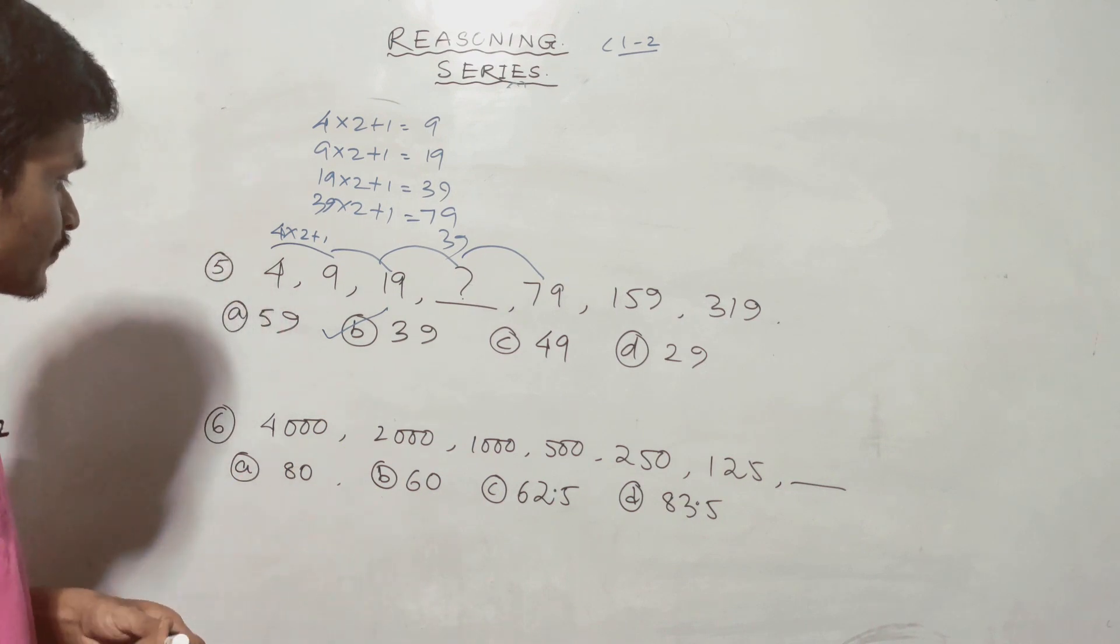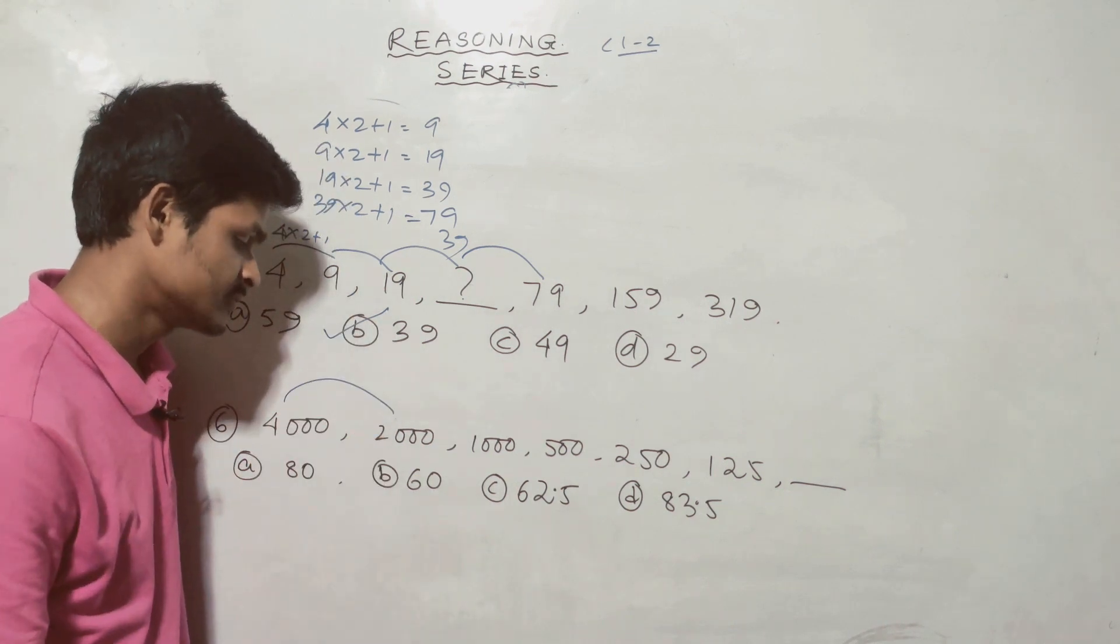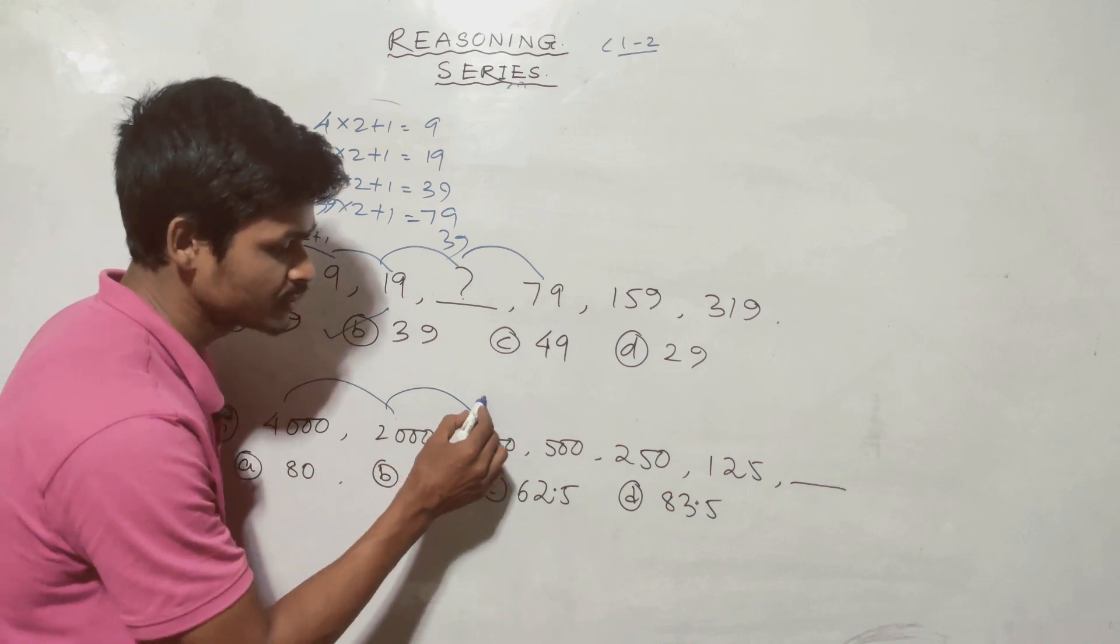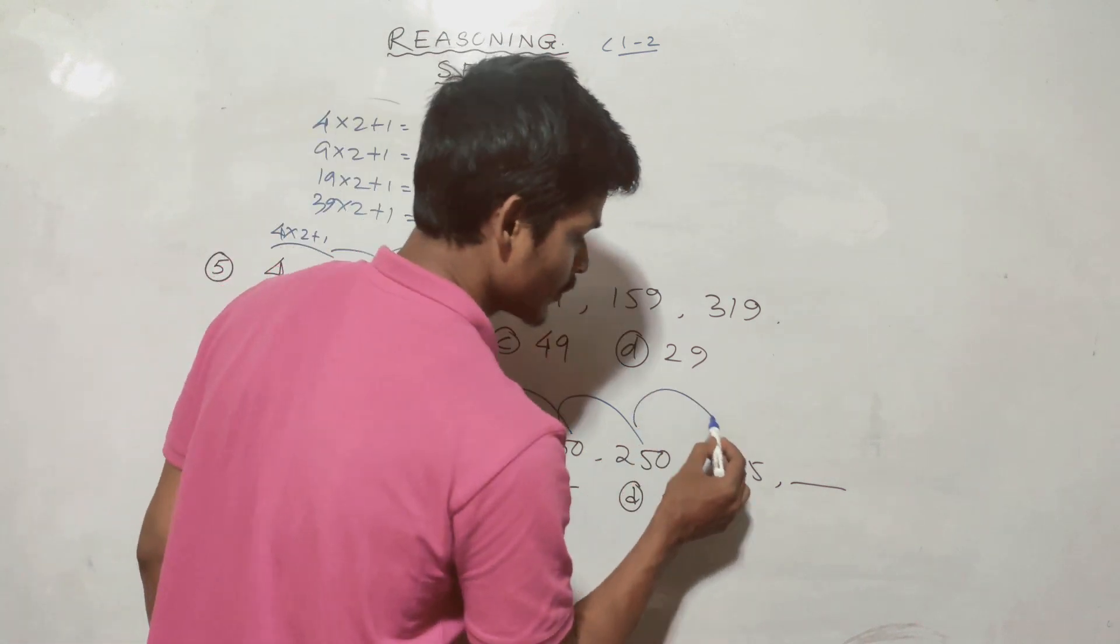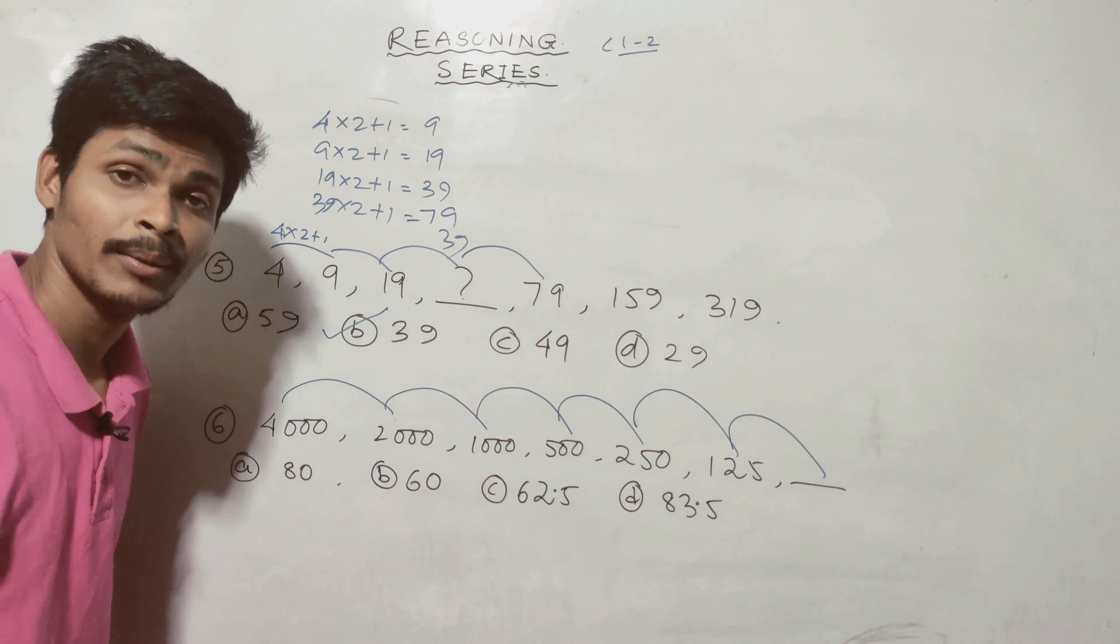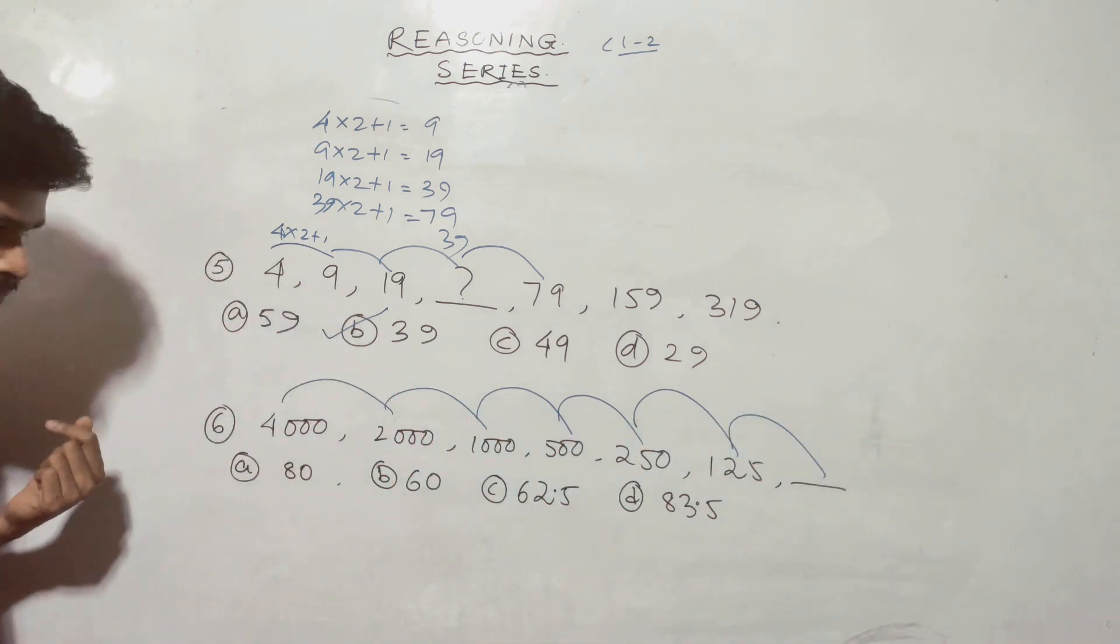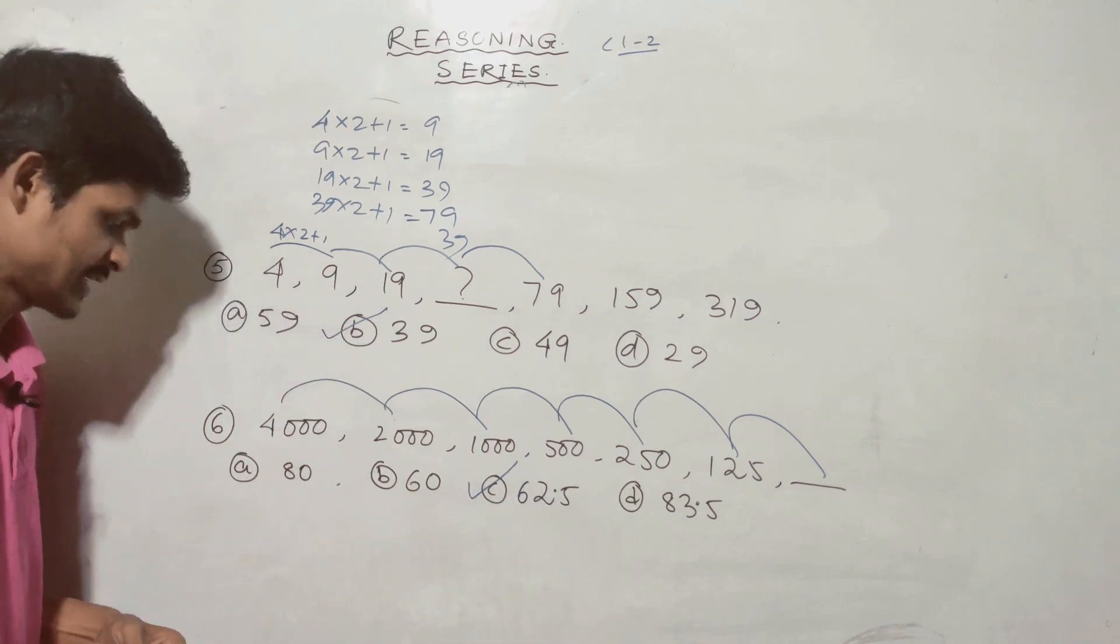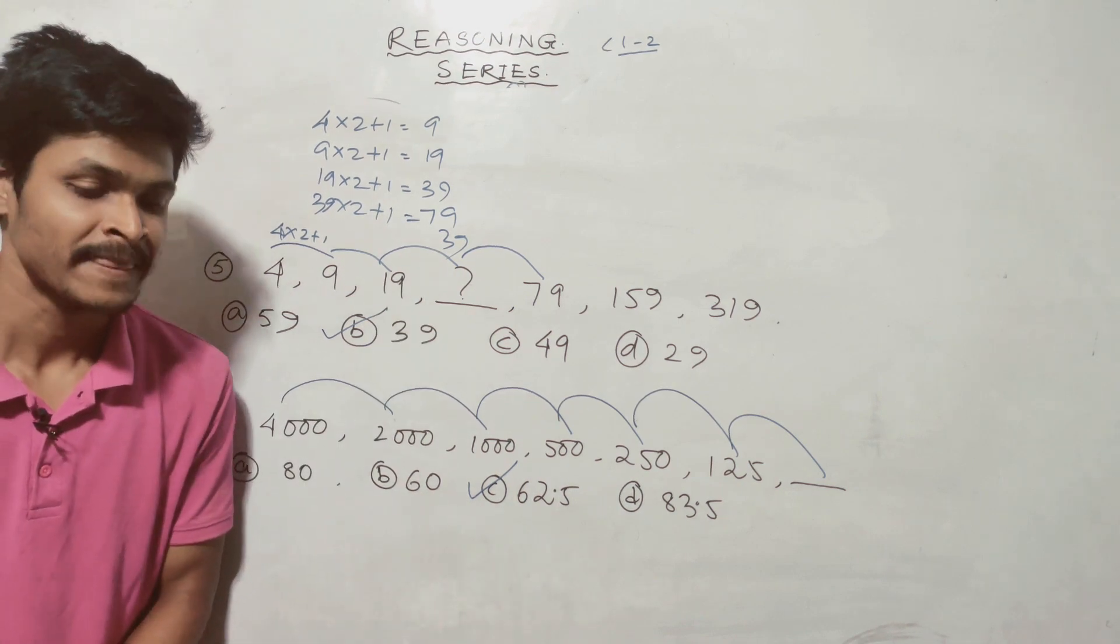Next question: 4000 divide by 2 is 2000. 2000 divide by 2 is 1000. 1000 divide by 2 is 500. 500 divide by 2 is 250. 250 divide by 2 is 125. 125 divide by 2 is 62.5. The answer is 62.5.